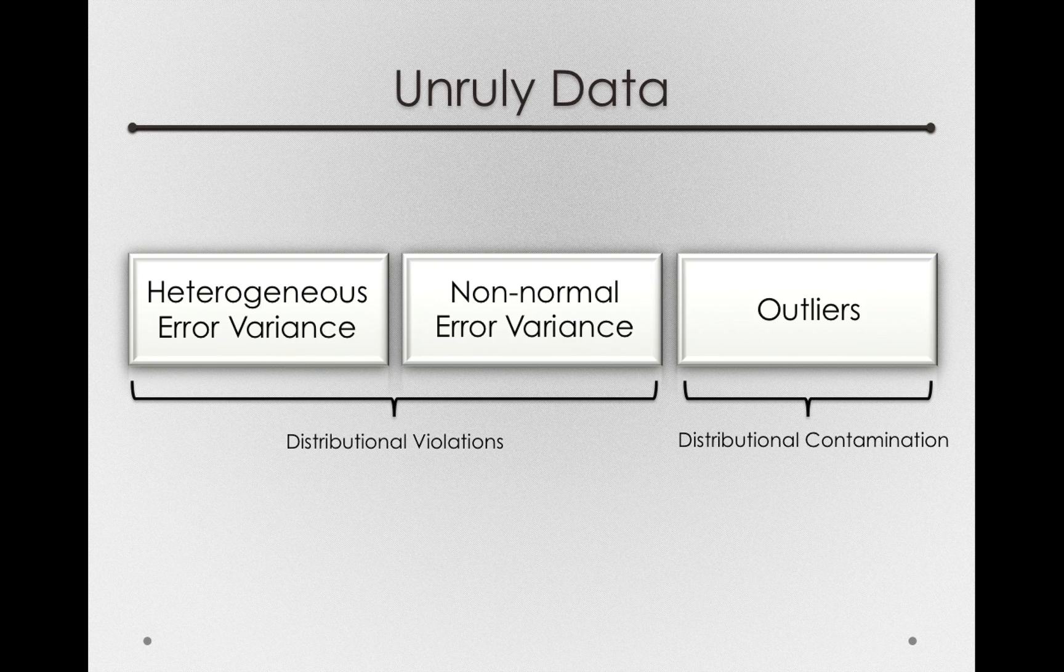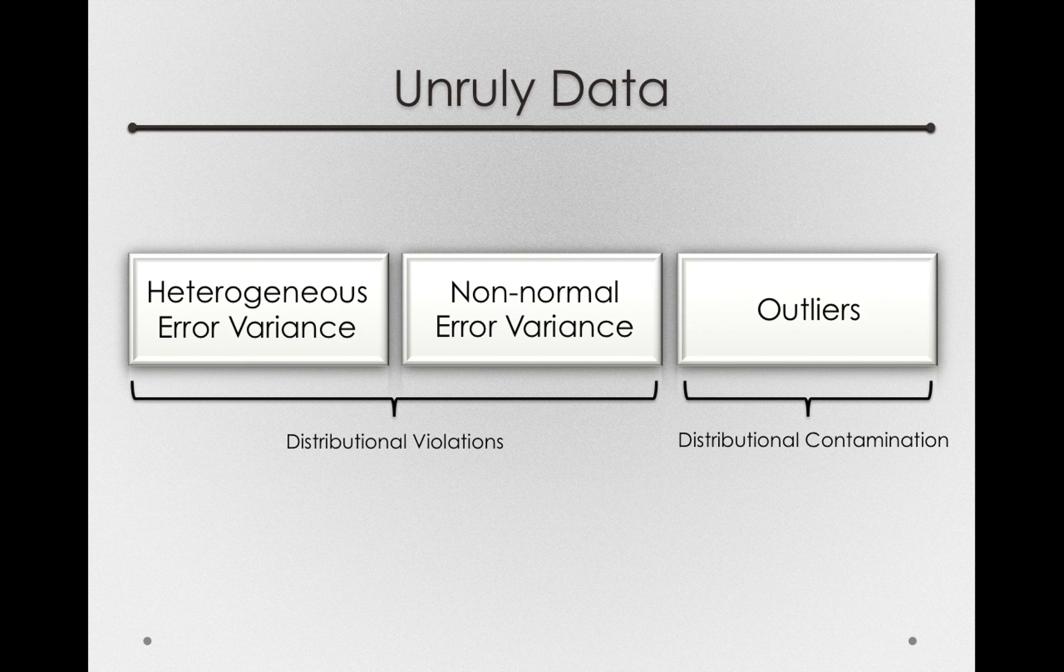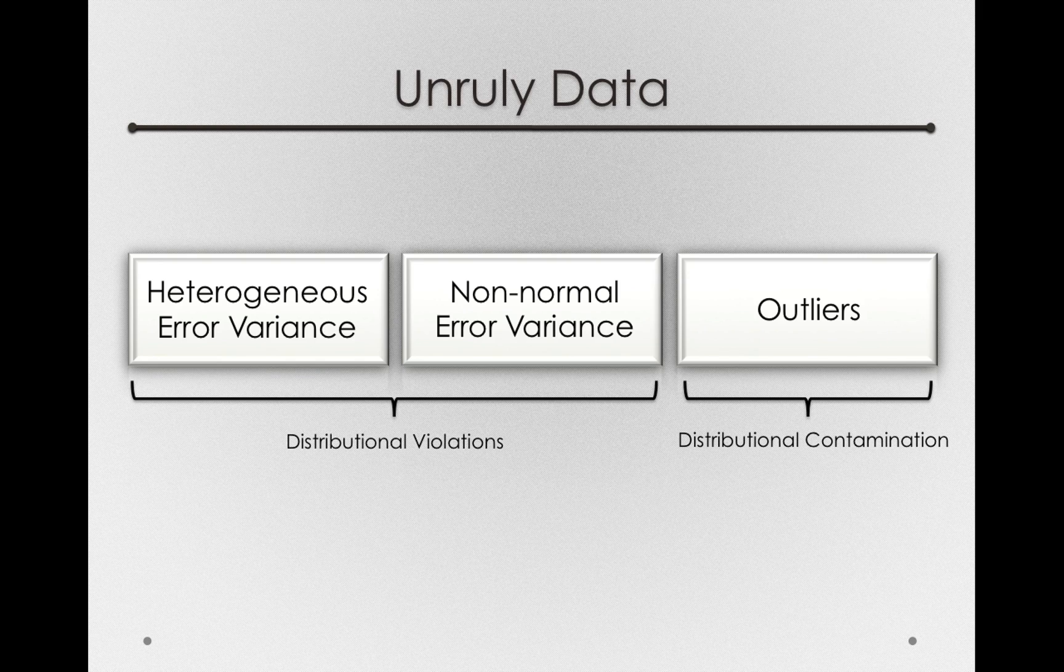It is never a good practice to only look for outliers once you've run an analysis and are unhappy with the result. That turns out to be a type of opportunistic analysis. That is, if you only look for outliers when you haven't first found an effect you want, you'll only remove outliers when they don't support your hypotheses.